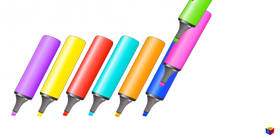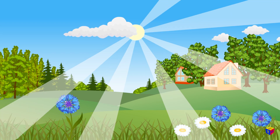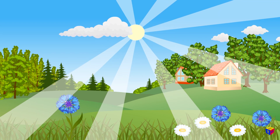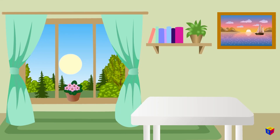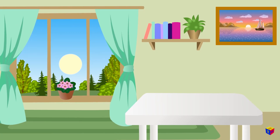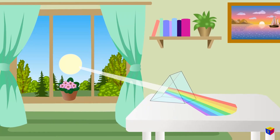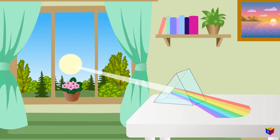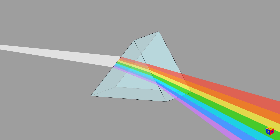Do you know why we see different colors? Sunlight is white. But white color is actually a complex color — it is made up of all the other colors. The great physicist Isaac Newton proved it. He took a transparent prism and sent a beam of sunlight through it. Look what happened! White light actually includes rays of different colors. When they mix, we see white light. The prism separated the rays, and we saw different colors individually.